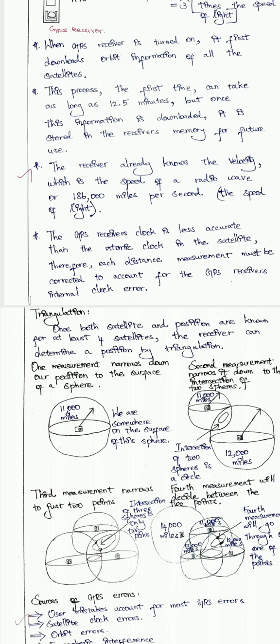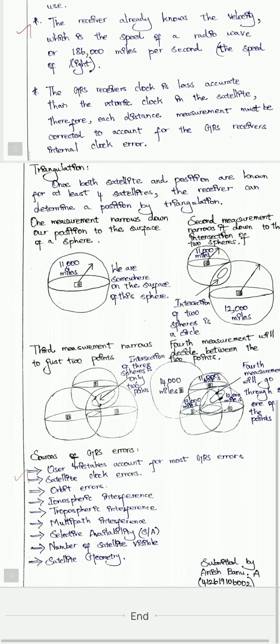Next, we go to the concept of triangulation. Once both the satellite position and distance are known for at least 4 satellites, the receiver can determine a position by triangulation. Using at least 4 satellites, we can identify the exact location by triangulation.